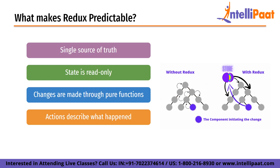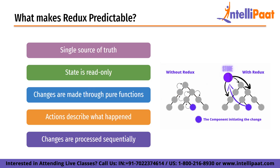Fourth, actions describe what happened. Actions in Redux are plain JavaScript objects that describe what happened in the application. This makes it easy to understand what changes are being made to the state and why. Finally, changes are processed sequentially. In Redux, changes to the state are processed in the order that they are dispatched. This ensures that the state is updated in a predictable and consistent way. By enforcing these rules and principles, Redux ensures that the changes to the state are predictable and consistent across an entire application, making it easier to understand how an application is working, debug issues, and maintain code over time.